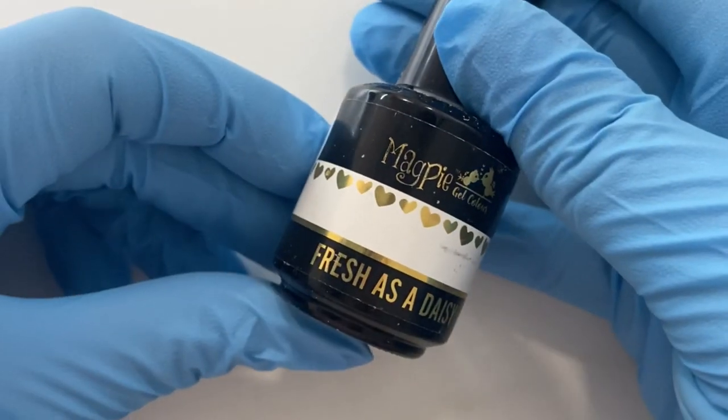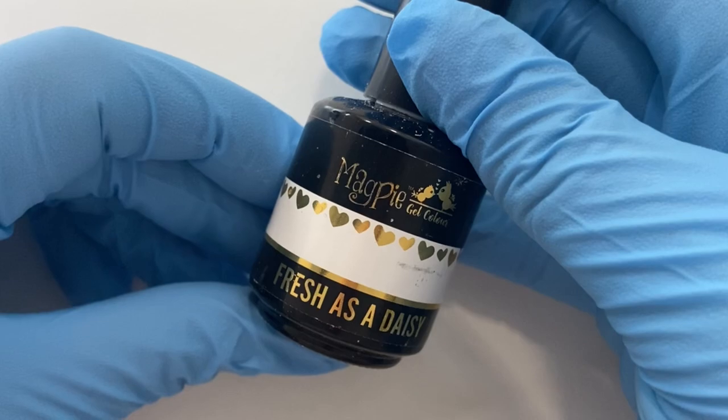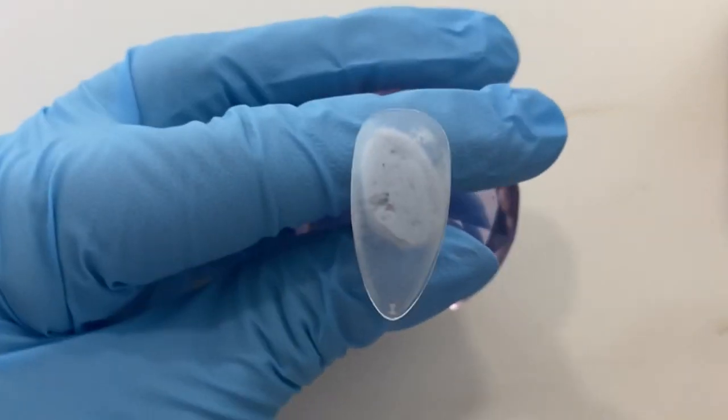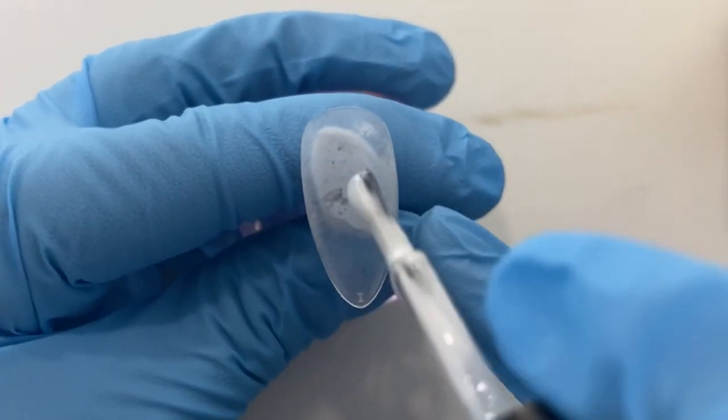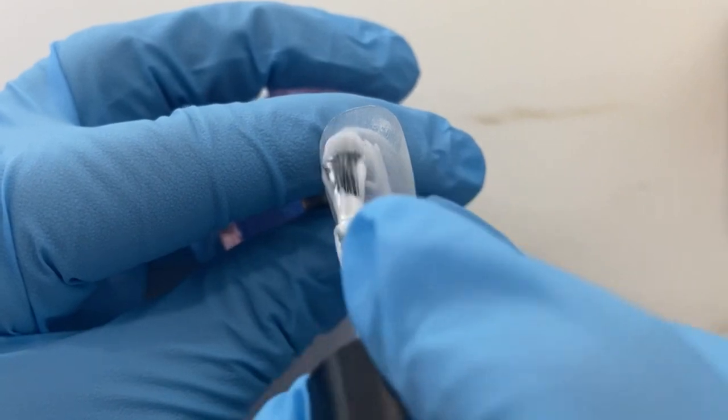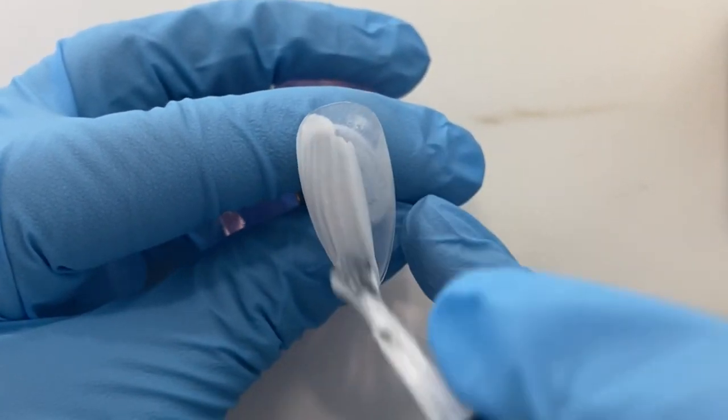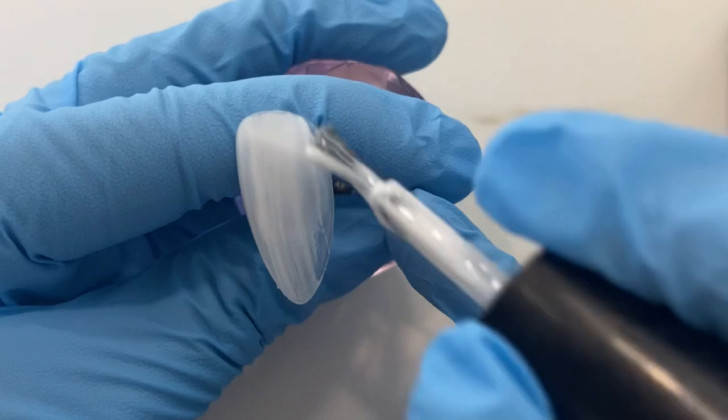For the foils it's always good to put a base coat underneath. For my one, because I've got a bit of white in the background, I'm going to use Fresh as the Daisy as my base, which is a milky white gel polish. You can choose your own base color to the foil that you're using. Once we've painted one coat over the entire nail, we're going to cure this in the Magpie lamp for 60 seconds.